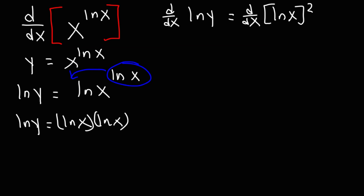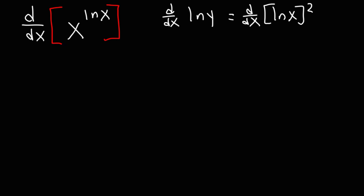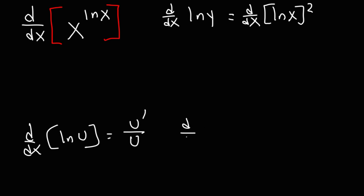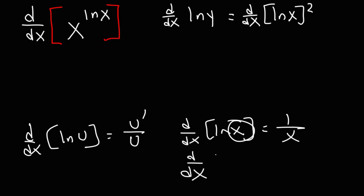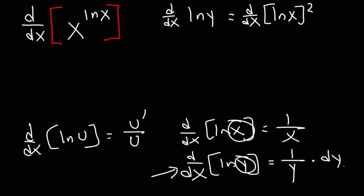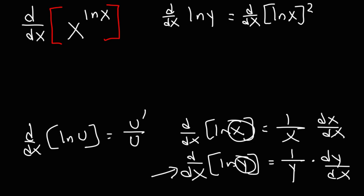Now what is the derivative of ln y? To differentiate a natural log expression, with a generic variable u, it's going to be the derivative of u divided by u. So the derivative of ln x: we take the derivative of x, which is 1, divided by x. The derivative of ln y is a little bit different — the derivative of y is 1 divided by y, but because we're differentiating y with respect to x, we're going to get dy/dx as well.